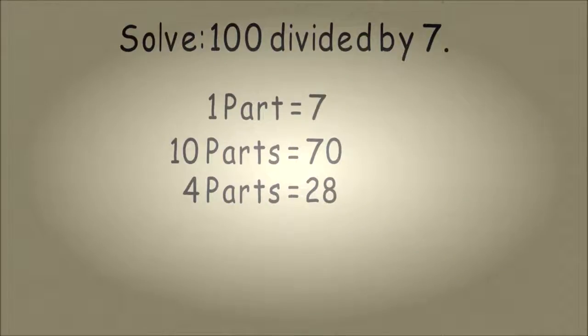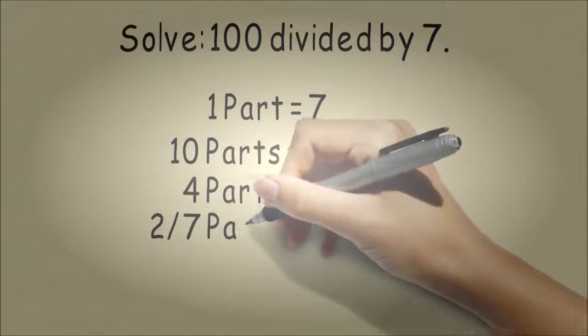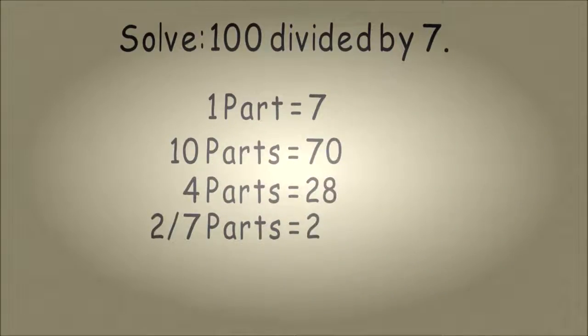We're short by 2 parts, or 2 until we get to 100. So 2 seventh parts will be equal to 2. So now we've added up multiples until we get to 100. So we have 70 plus 28 plus 2, and that gets us to our 100.